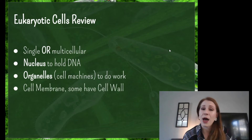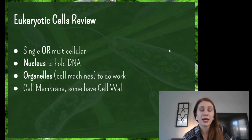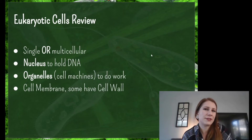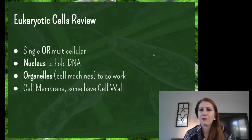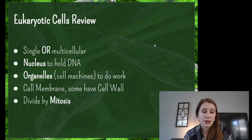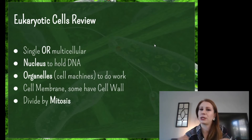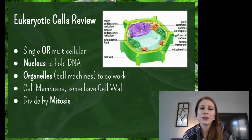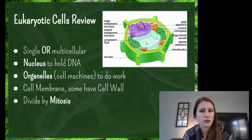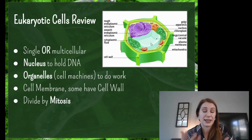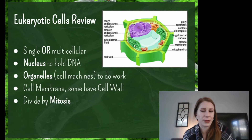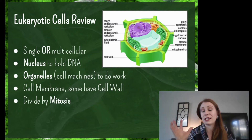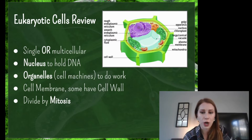They have a cell membrane, and some have a cell wall — not all have a cell wall. Animals like you and I do not have cell walls; plants and funguses do. But we all have cell membranes, or plasma membranes. We divide by mitosis: if I get a cut or need to grow, my cell replicates its DNA and then splits itself in two. Here is a basic picture of a plant cell — you can see the outside is very geometric. It has a cell wall, a large vacuole to hold extra water so the plant can stay upright, and chloroplasts.